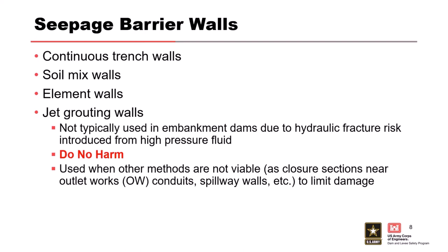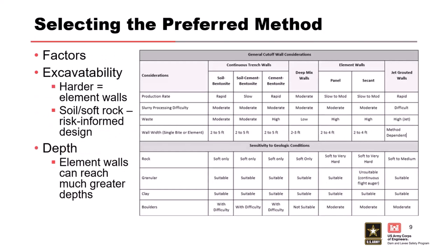Jet grouting has its time and place — it's good for tight locations where other methods aren't viable, such as closure sections or spillway walls, but you have to be really dialed in when using it. How do you pick your method? It depends on what you're excavating into. Soft material suits continuous trench or deep mixed walls; harder material suits element walls like panel walls or secant pile walls. Continuous walls are generally faster; element walls are slower but get into harder rock. Continuous walls have no joints; element walls do have joints — pluses and minuses for both.